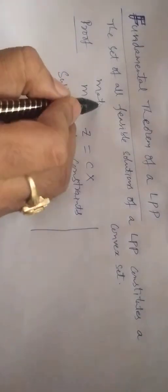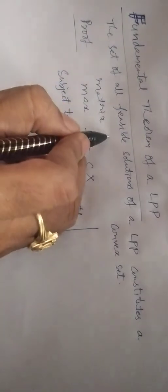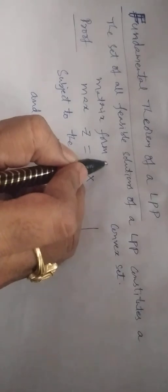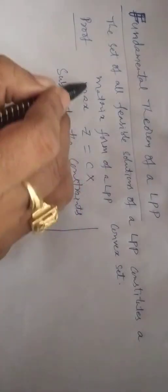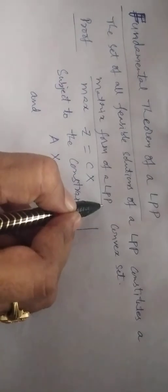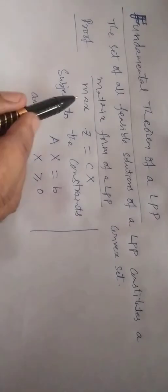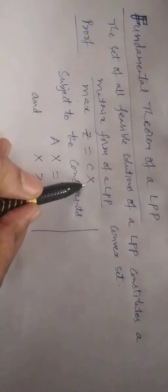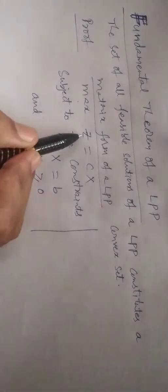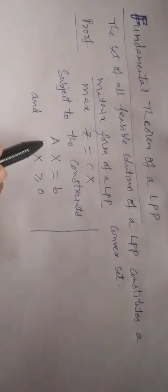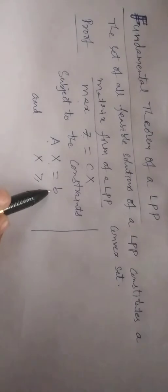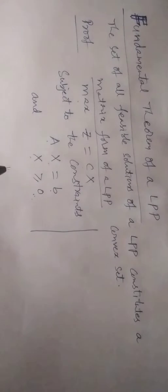If we consider this matrix form, this is the matrix form of a general linear programming problem — matrix form of an LPP, linear programming problem. That's what we have considered in the very first step of the proof of the theorem. Maximize z equals c into x, these two are matrices, z is a value. Subject to the constraints: Ax equals b, and x greater than or equal to 0. This is the matrix form we have considered.